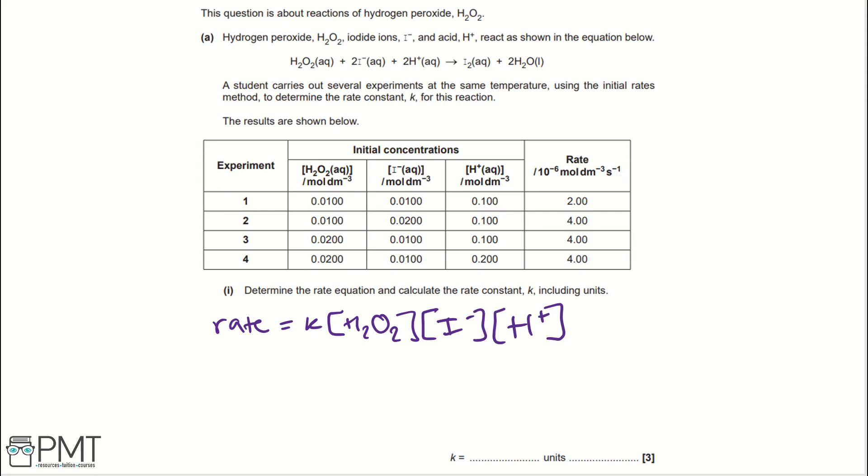To do this, we look for where one reactant has increased by a certain value and the others have stayed the same. So, looking at experiments 1 and 2, I- has increased by a value of 2 and H2O2 and H+ have stayed the same. Then you look at rate. Rates increase by a value of times 2 as well. Now, therefore, the order of reaction for I- ions is first order. So, I would have a little 1 going above its bracket.